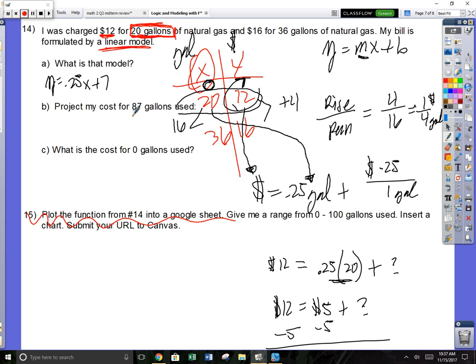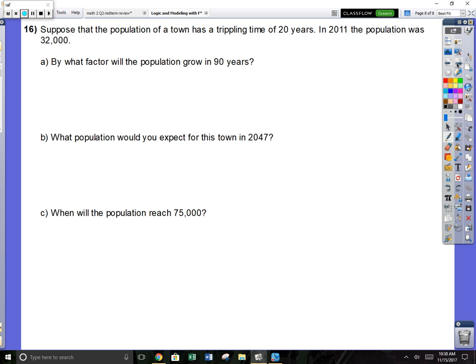Your model is this: y equals 0.25x plus 7. Project my cost for 87 gallons. I'm going to take the 87 and times each of them by a quarter. 87 times 0.25, add that to 7, and my bill is going to be $28.75. We actually have done, what is the cost for 0 gallons? It's going to be $7.